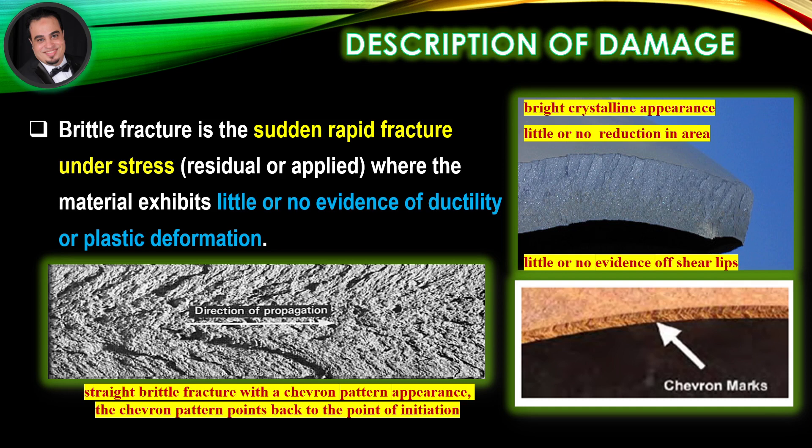Features of Brittle Fractures, as illustrated in figures, usually occur without visible or audible warning. In certain cases: bright crystalline appearance, little if any reduction in area, little if any evidence of shear lips. In certain cases, a chevron pattern appearance — the chevron pattern points back to the point of initiation.